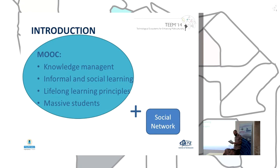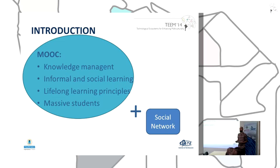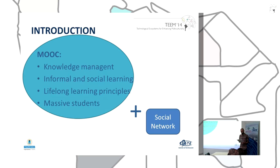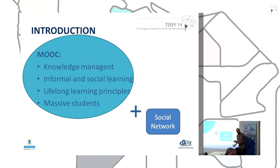A MOOC has specific characteristics like knowledge management, informal social learning, lifelong learning principles, and massive students. These characteristics are important to understand how we can adopt a gamification model in a MOOC. The MOOC platforms usually provide some social tools to allow students and teachers to communicate, but in most cases these platforms have very poor tools for these needs. We need to associate a MOOC with external communities of learning, and in most cases we use social networks to implement this. One of the most important problems in a MOOC is the low rate of completion, and we try to address and improve this.